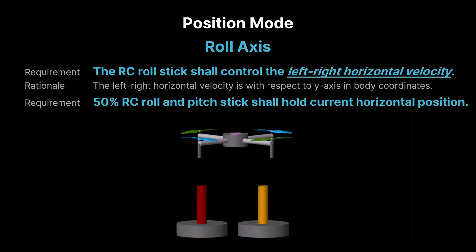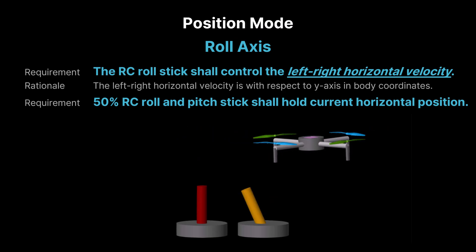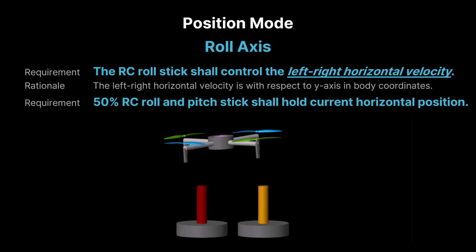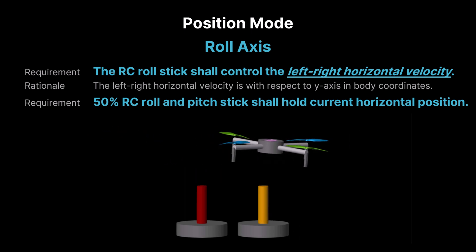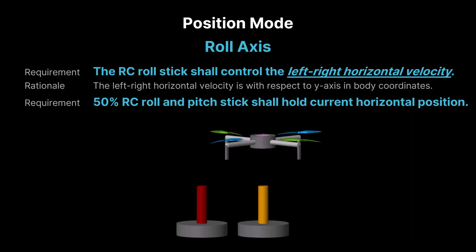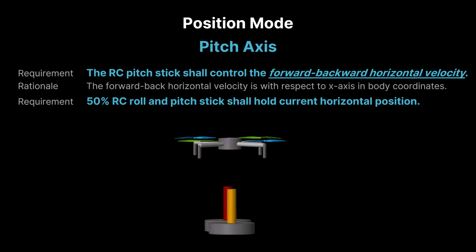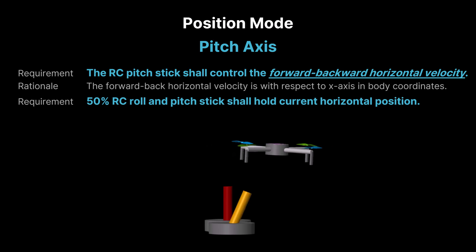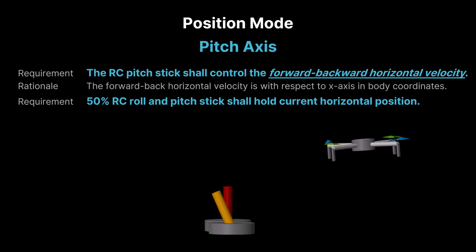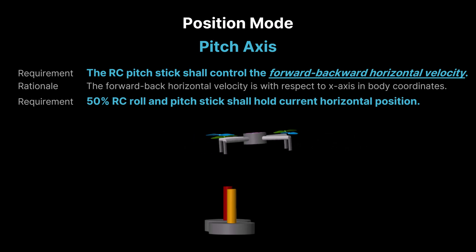In the roll axis of position mode, the RC roll stick controls the quadcopter's horizontal velocity in the left and right direction, along the y-axis in body coordinates. Releasing the stick allows the autopilot to automatically hold position. Similarly, in the pitch axis of position mode, the RC pitch stick controls the quadcopter's horizontal velocity in the forward and backward direction, along the x-axis in body coordinates. Releasing the stick allows the autopilot to automatically hold position.